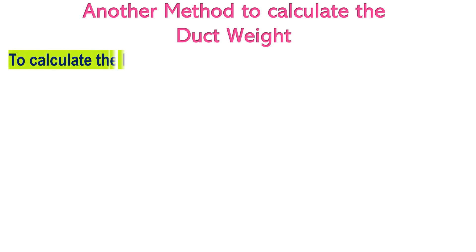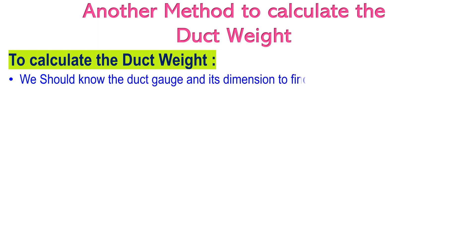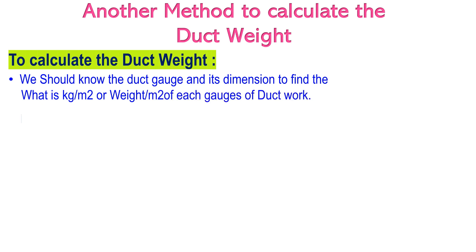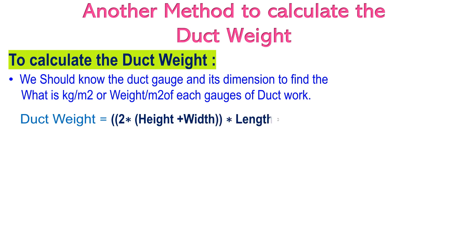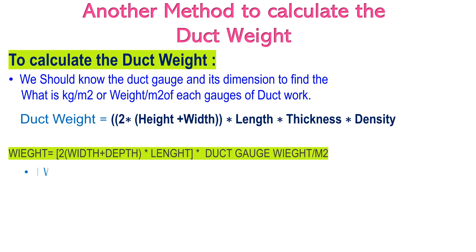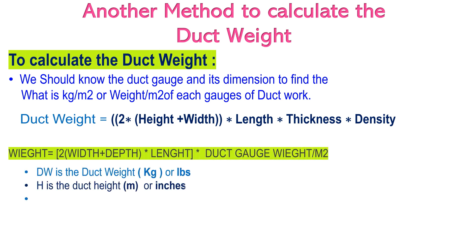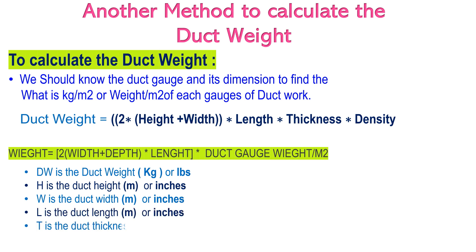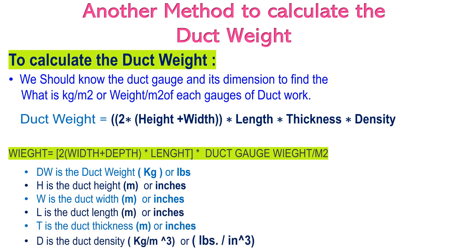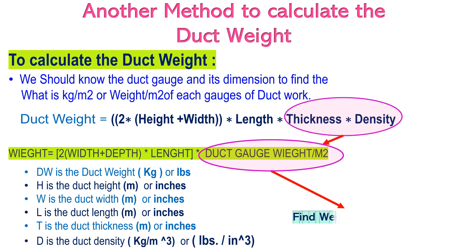Another method to calculate duct weight: we should know the duct gauge and its dimensions to find the kg per square meter, or weight per square meter, for each gauge of ductwork. Duct weight equals 2 multiplied by (height plus width), multiplied by length, multiplied by thickness, and multiplied by density. Thickness multiplied by density equals the duct gauge weight per square meter, so find the weight per square meter values from the chart.